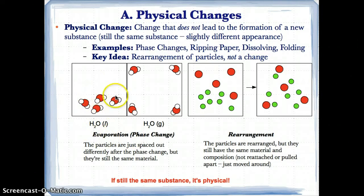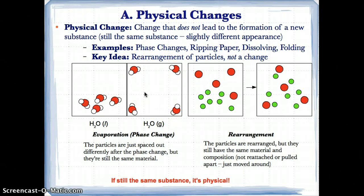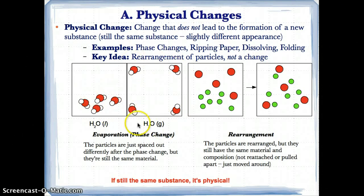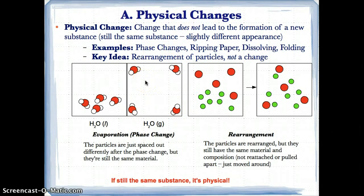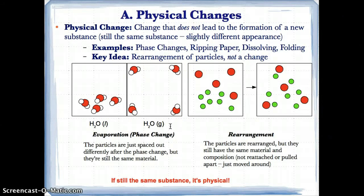For example, with H₂O liquid particles and H₂O gas particles — evaporation is a phase change where you go from liquid to gas. The only thing changing is the space between particles. In liquid there's less space; in gas there's more space. The particles are just spaced out differently after the phase change, but they're still the same material, H₂O. So a phase change is a physical change because it's still H₂O in both states.